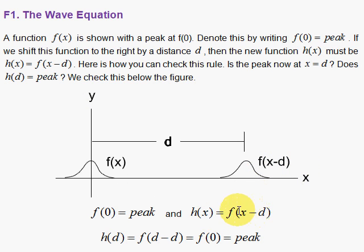And I want to check to see if that indeed is the function by checking where the peak is. f of 0 is peak. What is h of d? In other words, the new function evaluated down the road at d. Well, h of d would be f of the quantity d minus d in the argument, and that's f of 0, and that is peak. So that shows it.